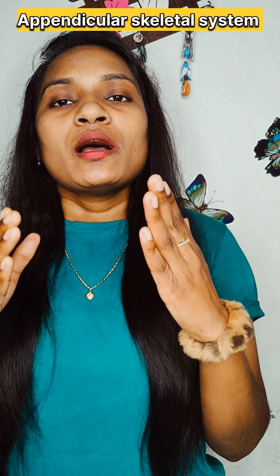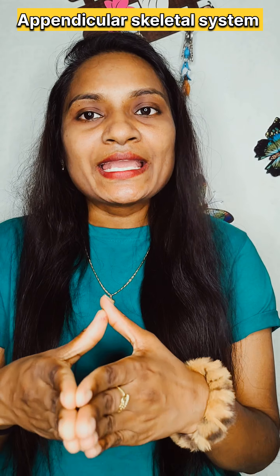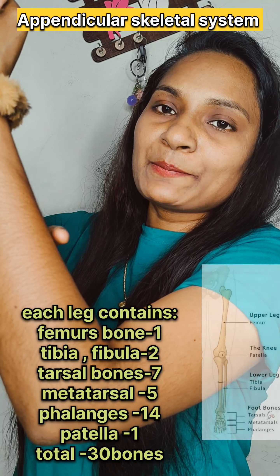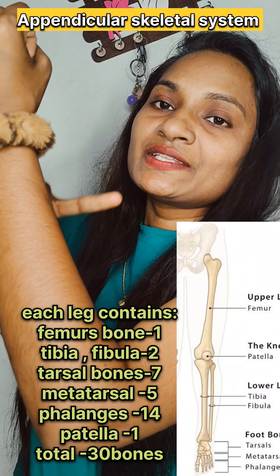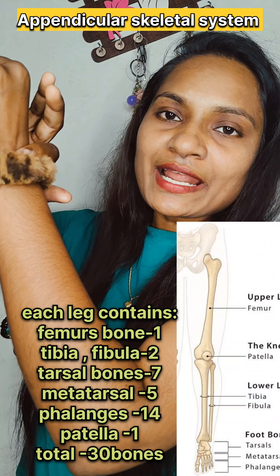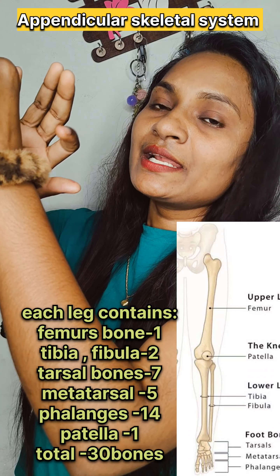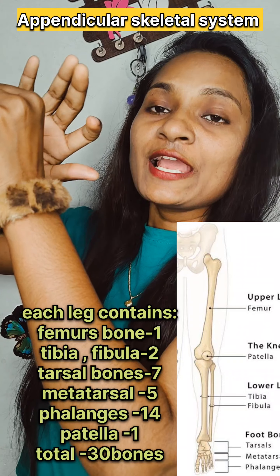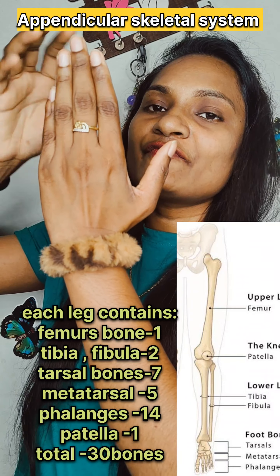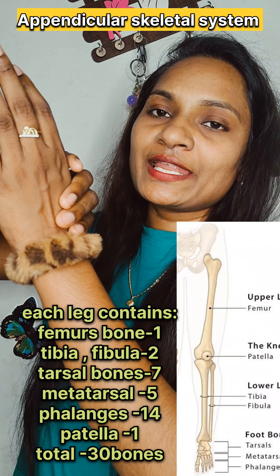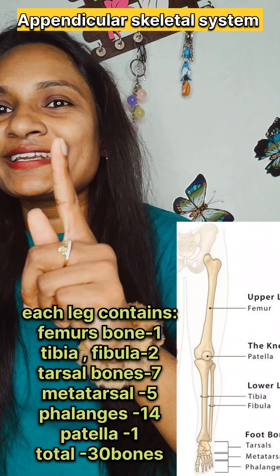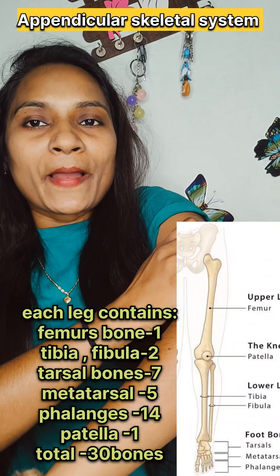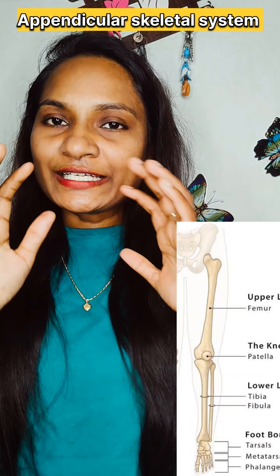Lower limbs contain 60 bones and upper limbs contain 60 bones, total 120 bones. I will explain how each hand contains 30 bones. This is my hand: humerus bone 1, radius and ulna 2, so that's 3. Plus 8 carpal bones makes 11. Plus 5 metacarpals makes 16. Plus 14 finger phalanges makes 30 bones in each upper limb.